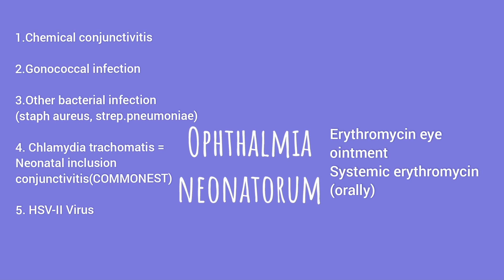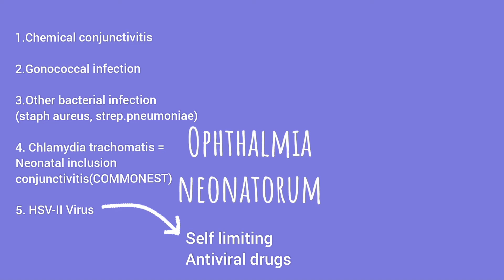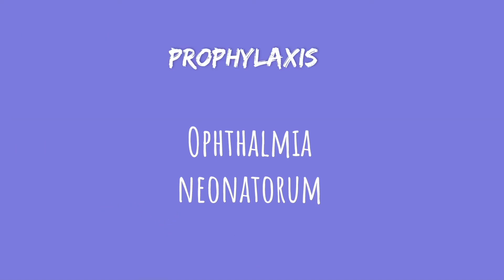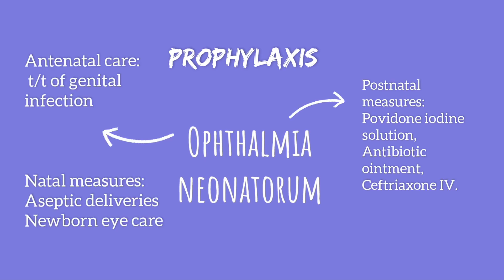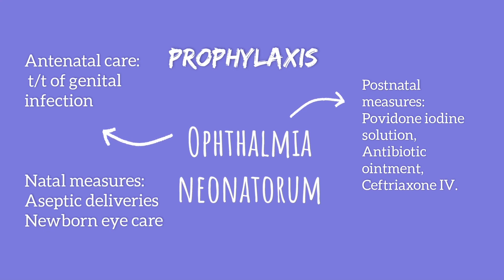For neonatal inclusion conjunctivitis caused by Chlamydia trachomatis, erythromycin should be given as ointment topically and also systemically. Herpes simplex conjunctivitis is self-limiting but should be controlled with antiviral drugs. To prevent the disease, the mother should be treated for genital infections when suspected. There should be aseptic deliveries, newborn eye care, and after delivery, povidone-iodine solution or antibiotics can be used.